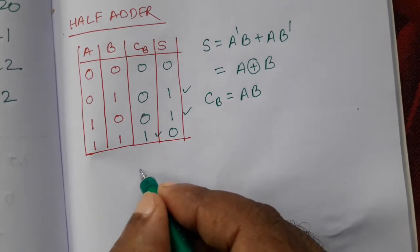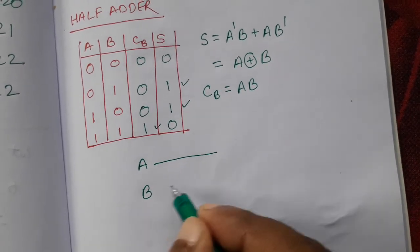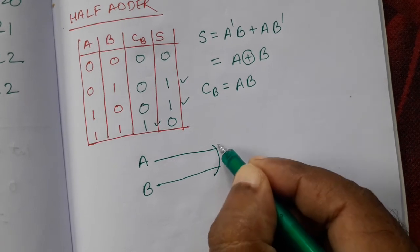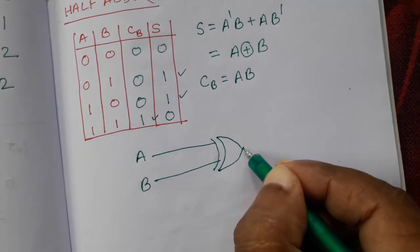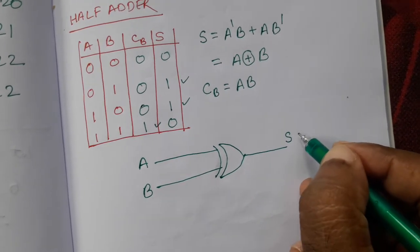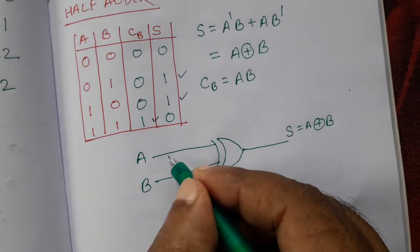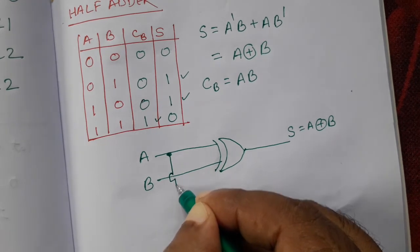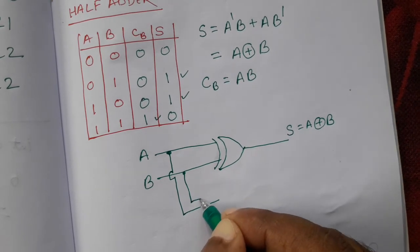So we need A, B, and because XOR gate, so what we can do, we will create XOR gate. That is our sum bit. It is A XOR B. And from here we will take another one, A and B.